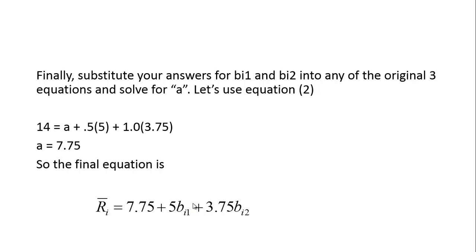Finally, I need to solve for A. I can pick any of the original three equations — I'll use equation 2, and I get 14 equals A plus 0.5 times 5, plus 1.0 times 3.75. Solving for A, I get 7.75. So the final equation is that the expected return of i is 7.75 plus 5 times BI1 plus 3.75 times BI2. I hope that's helpful — for people who were looking at the previous video and a little confused about how I got to the solution, it's really just a lot of algebra.